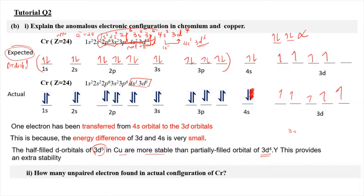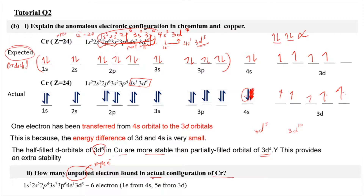The fully filled orbital would be 3d10 with positive and negative spin halves, giving 10 electrons total. But a stable orbital can also form with 3d5 of the same spin. For question B2 — how many unpaired electrons are found in the actual configuration of Cr? Unpaired electrons are single electrons without a pair. Counting them: 1, 2, 3, 4, 5 from 3d, and 6 from 4s — so there are 6 unpaired electrons: 1 from 4s and 5 from 3d.